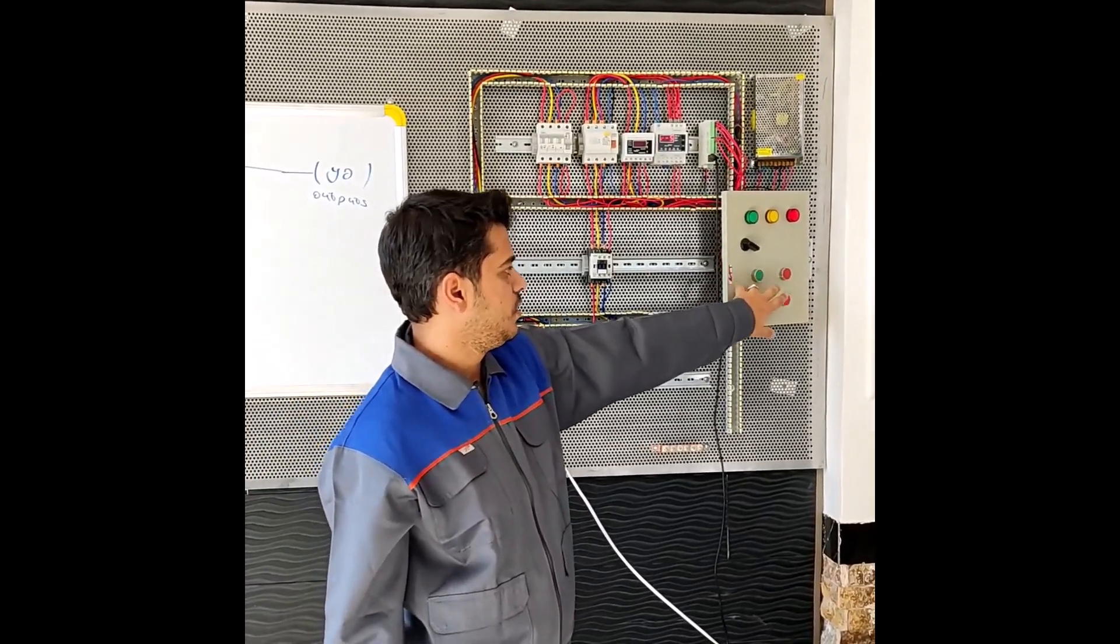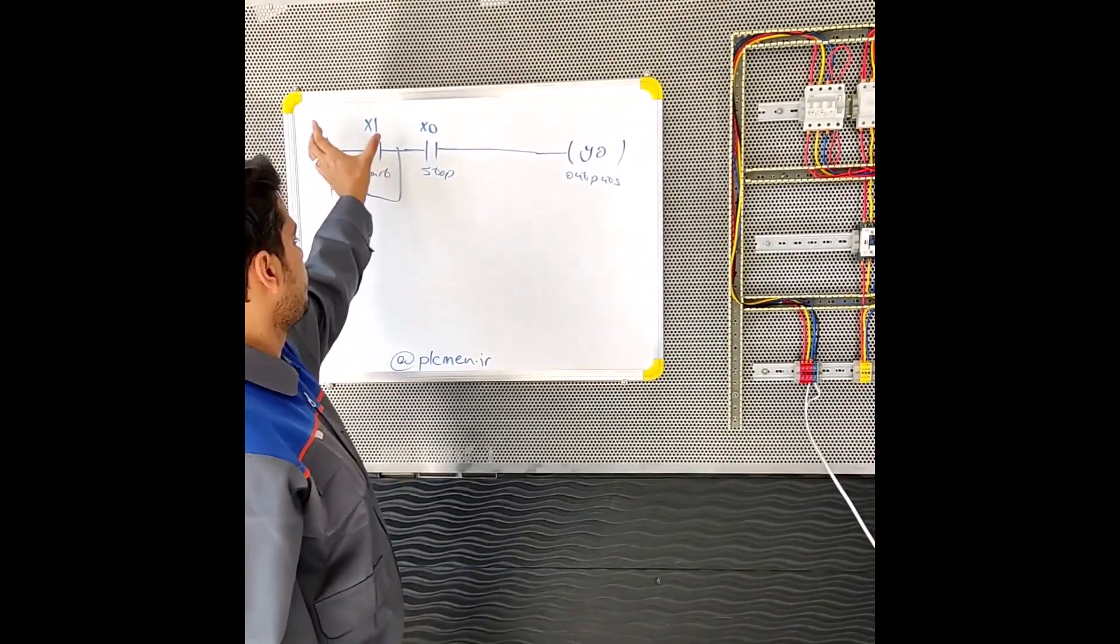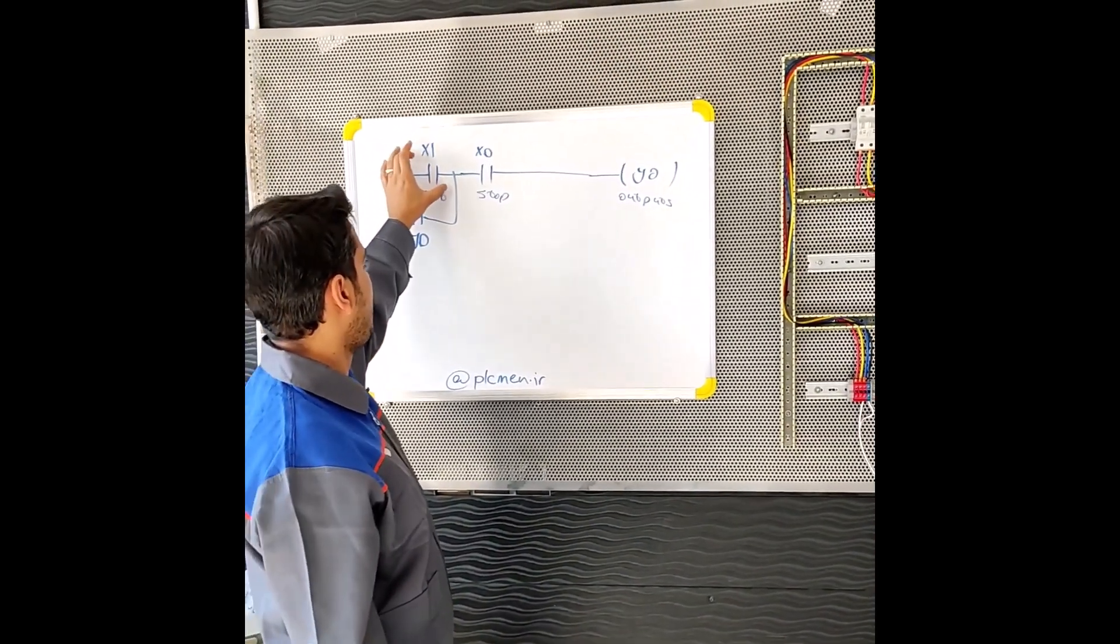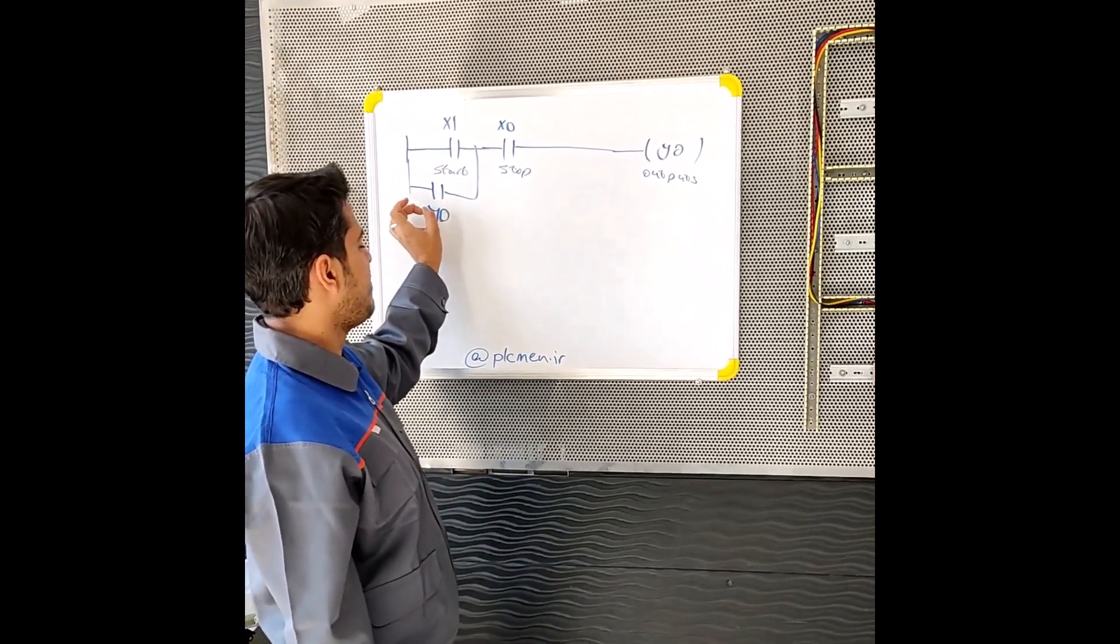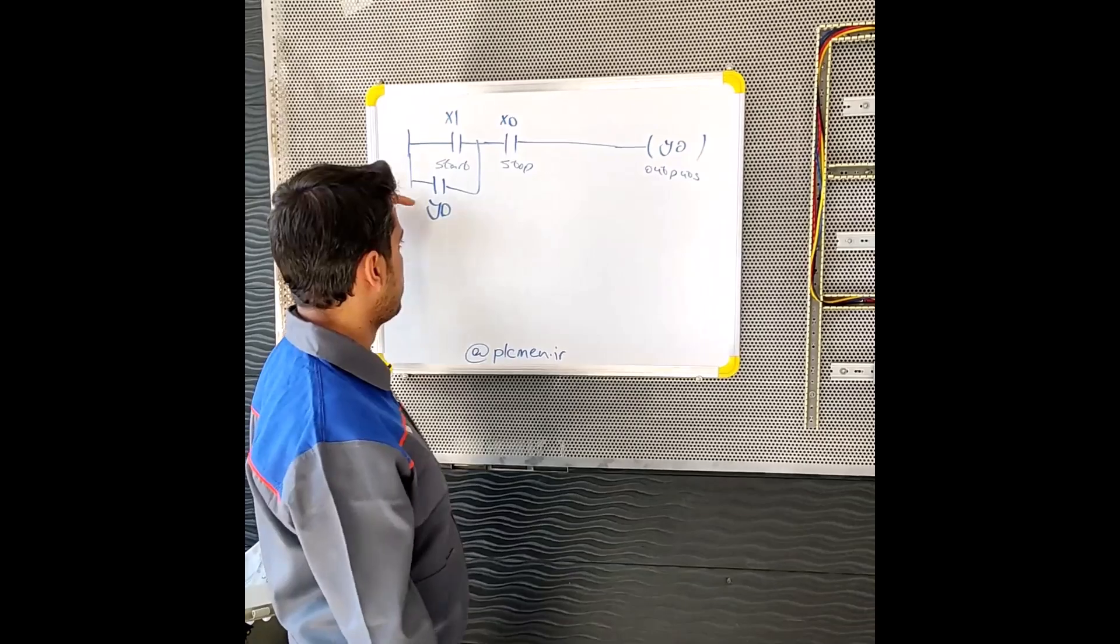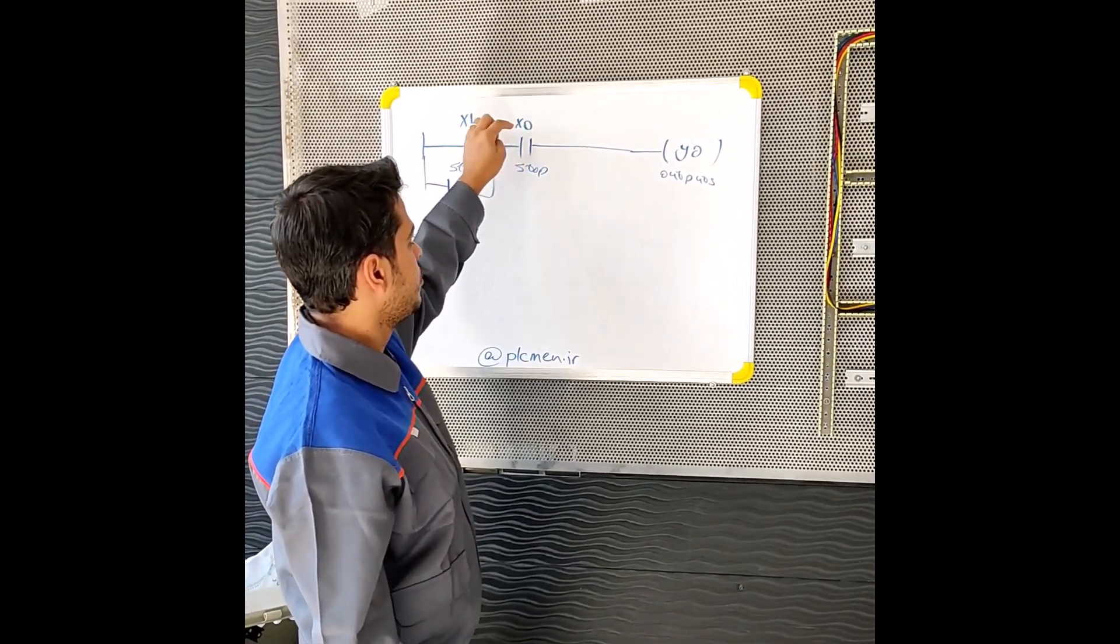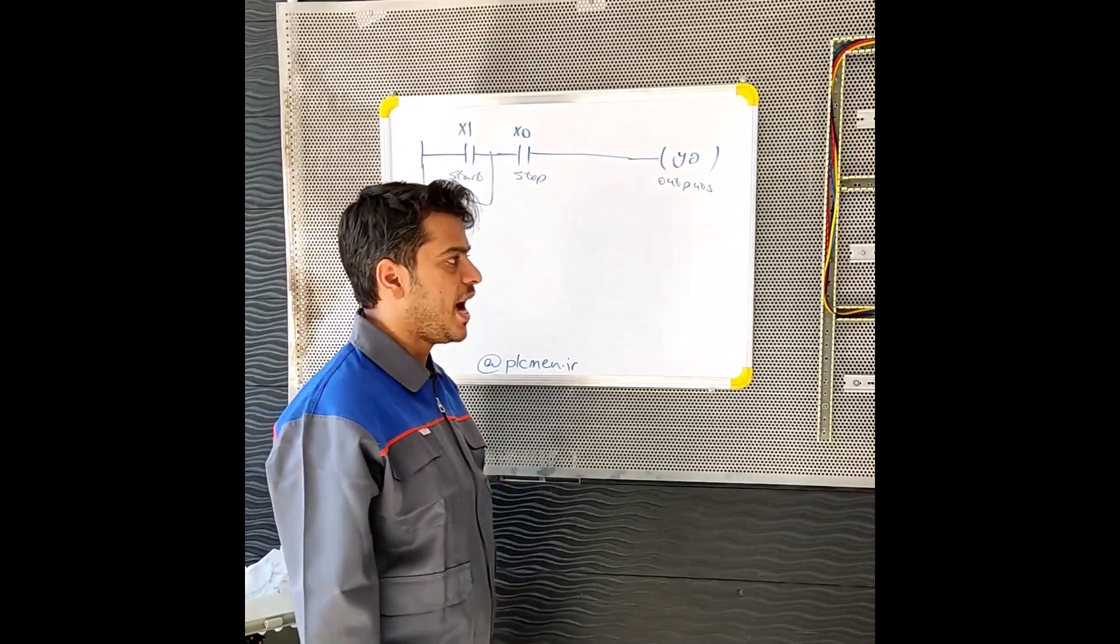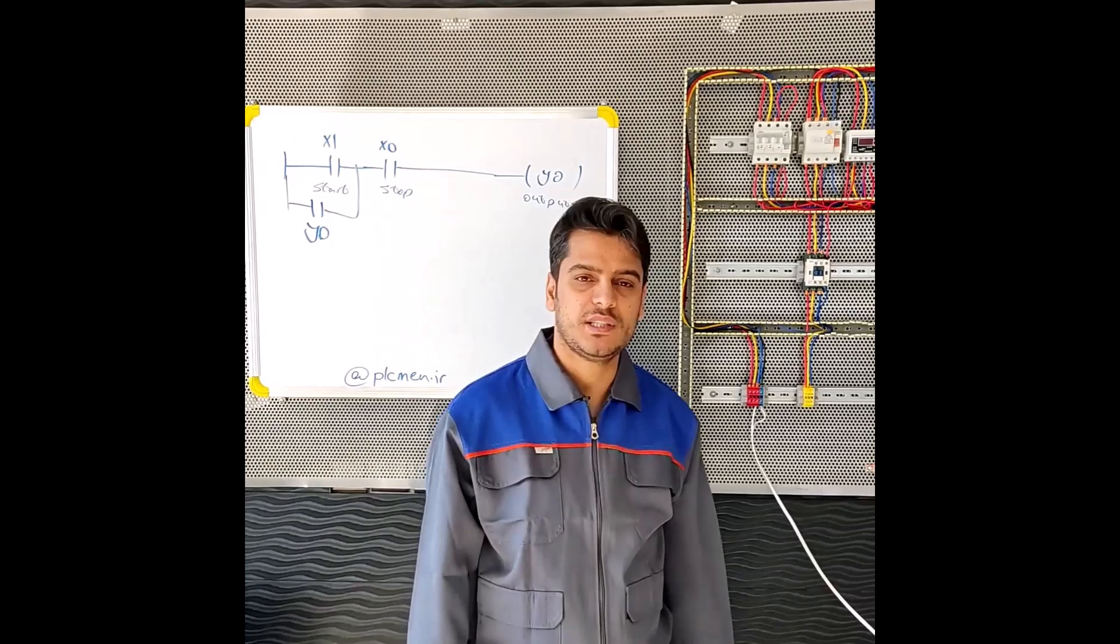Because we parallel the output with the input, when the start is activated, the output is activated and this contact is activated. It gives the electric current that passes through the power unless we cut off this power by using the stop input.